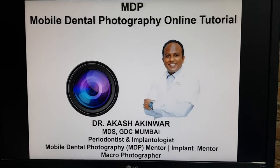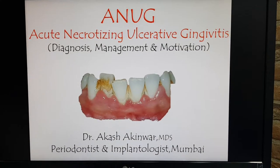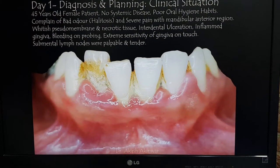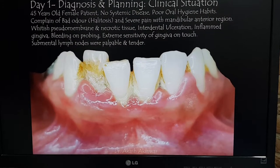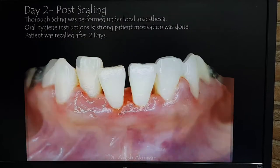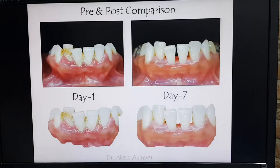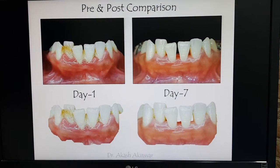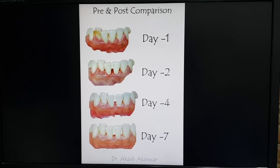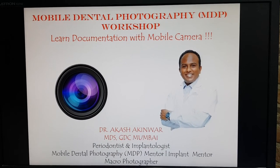Through this mobile dental photography online tutorial, let me show you a small case of ANUG that I have documented using this selfie ring light. You can easily make out the quality and clarity in the images — the light is diffused very well, which is why my mobile camera has captured beautiful images. All these images were captured using the selfie ring light as an additional source of light, either along with the inbuilt flash or sometimes as a separate entity.